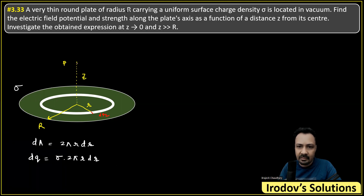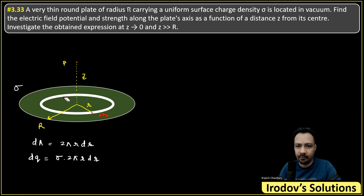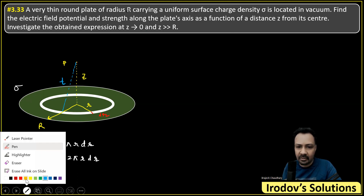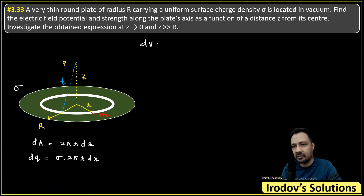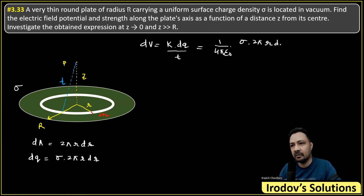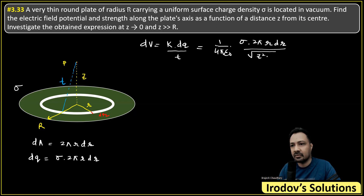Any point of this elemental ring is at the same distance from the axial point P. Let's call that distance t. So all points of the ring are at the same distance t from P, and the electric potential at P due to this elemental ring is dV = k·dq / t, where k = 1/(4πε₀). So dV = [1/(4πε₀)] · sigma · 2πr dr / t, and t = √(z² + r²).